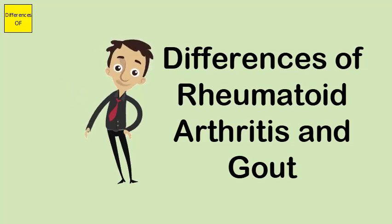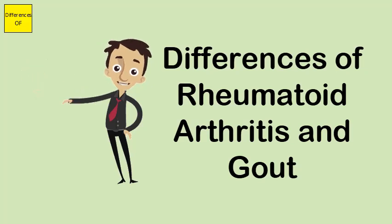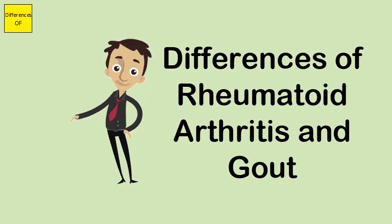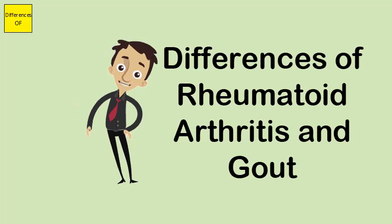RA affects more women than men. Gout is more common in men than women, and in women after menopause. RA is symmetrical, often affecting small and large joints on both sides of the body.